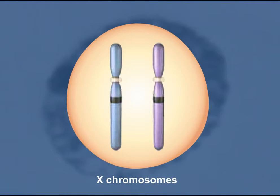X-inactivation is a process that mammals use to equalize the gene dosage between males and females. Since normal male mammals have only one X chromosome and females have two, there is a potential imbalance in the expression of genes on the X chromosome between males and females.